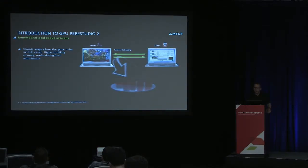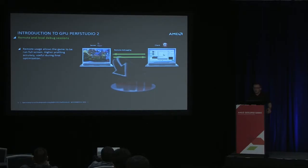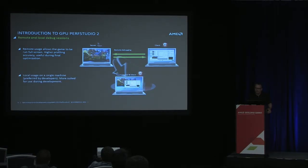Remote debugging allows you to run your game in foreground mode so it gets most of the priority of the CPU and GPU. You've got your .NET client running on another machine over the network, extracting the data from your game — this is the best way to get good, accurate profiling information. But you can also run both on a single machine. It runs on all of AMD's hardware, so this is great for general development mode.